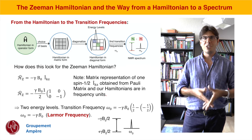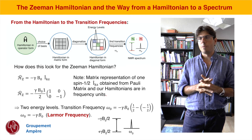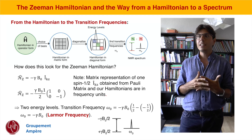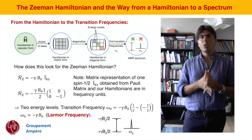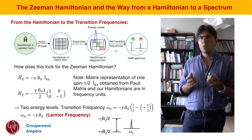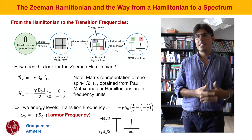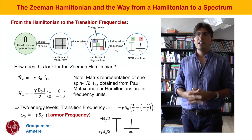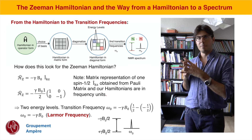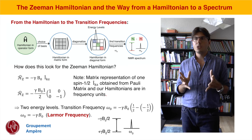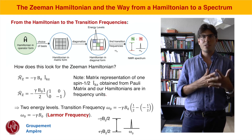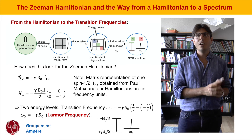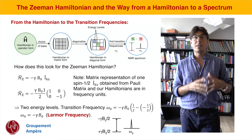Looking at our Zeeman Hamiltonian in its standard expression, it still contains the IKz quantity in operator form. To transform this into matrix form, we use the IKz operator in Cartesian coordinates, which is just the Pauli matrix (1, 0; 0, −1) times one-half for a spin-1/2 system. We insert the corresponding Pauli matrix and get the expression: minus gamma times B0 times one-half times the Pauli matrix. The Pauli matrix is already in diagonal form, so we do not need to diagonalize the Zeeman Hamiltonian in this basis set.